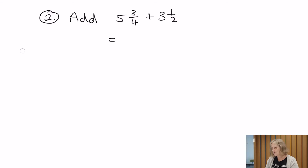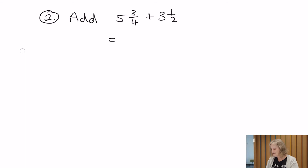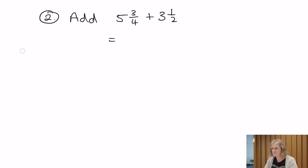There are actually two ways we could do this question, both for adding or subtracting. My preference would be to change the mixed numbers into improper fractions — that's the standard I would suggest. Because when you come to doing subtraction, it gets tricky if the first fraction is smaller than the second fraction. So as soon as you see a mixed number with fractions, always change it to an improper fraction — that really helps longer term.